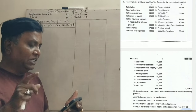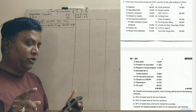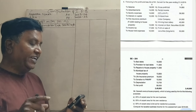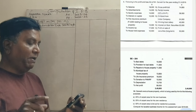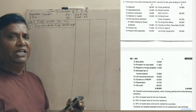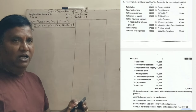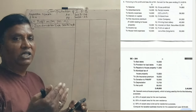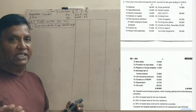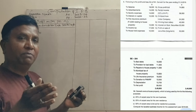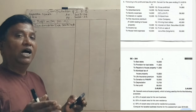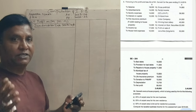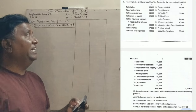Mr. Ganesh has a house property which is being used for the following purposes: 25% of carpet area for his own business, 25% of carpet area for his own residence, and 50% of carpet area is let out for residential purposes. This is one adjustment.